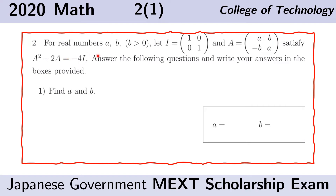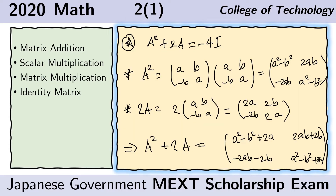For real numbers A and B, where B is a positive number, let I be the identity matrix and A be this matrix. Both I and A satisfy this equation here. Now we need to provide the answers to the following question. We are looking for the values of A and B, and the only relationship given in the problem is this relationship.